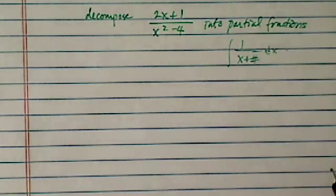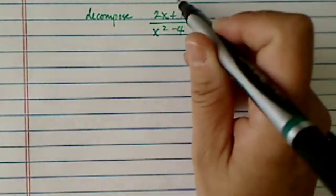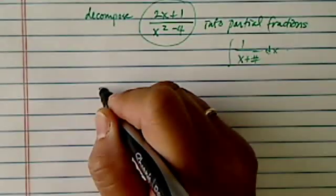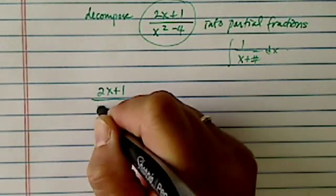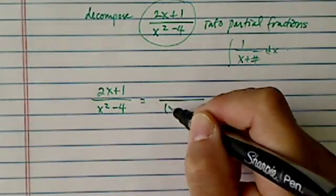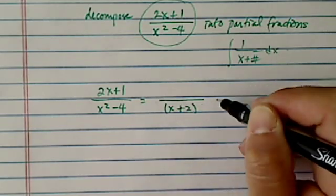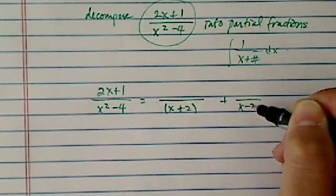So let's take a look at how we integrate and decompose this one. We have 2x plus 1, x squared minus 4, so what you need to do is you factor it first, plus 2 and x minus 2.